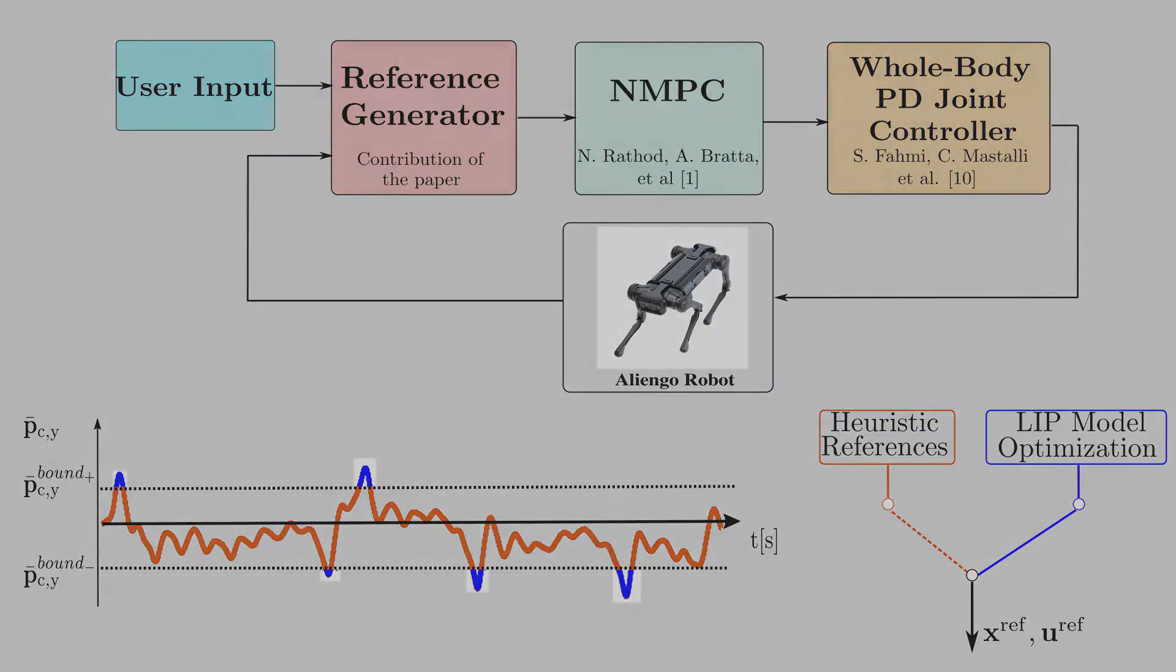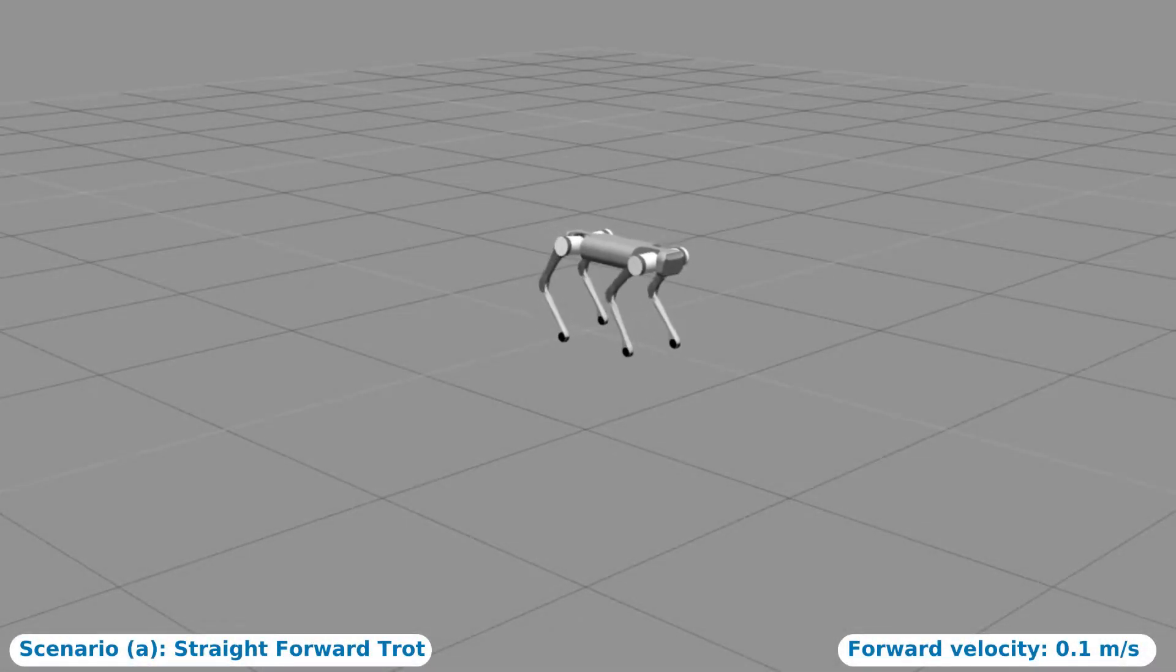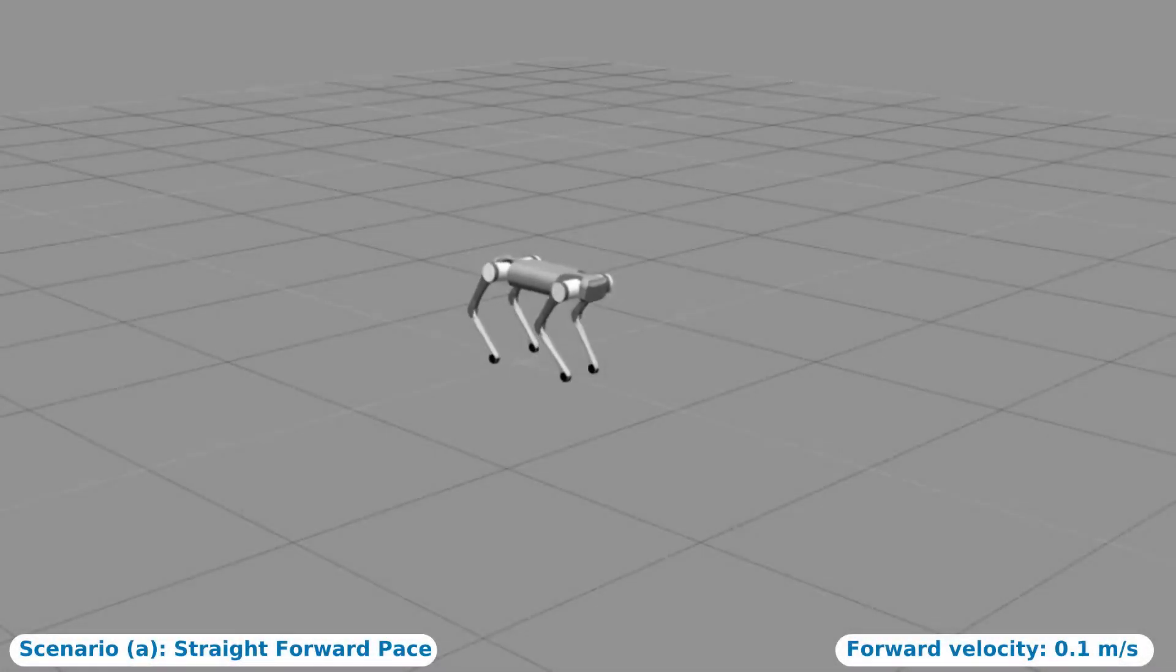In the first simulation, we show that the optimized reference generator allows the robot to walk straight forward doing a trot gait. A similar result is obtained with a pace gait. In this way, we demonstrate that our framework presents good performance with different gaits.